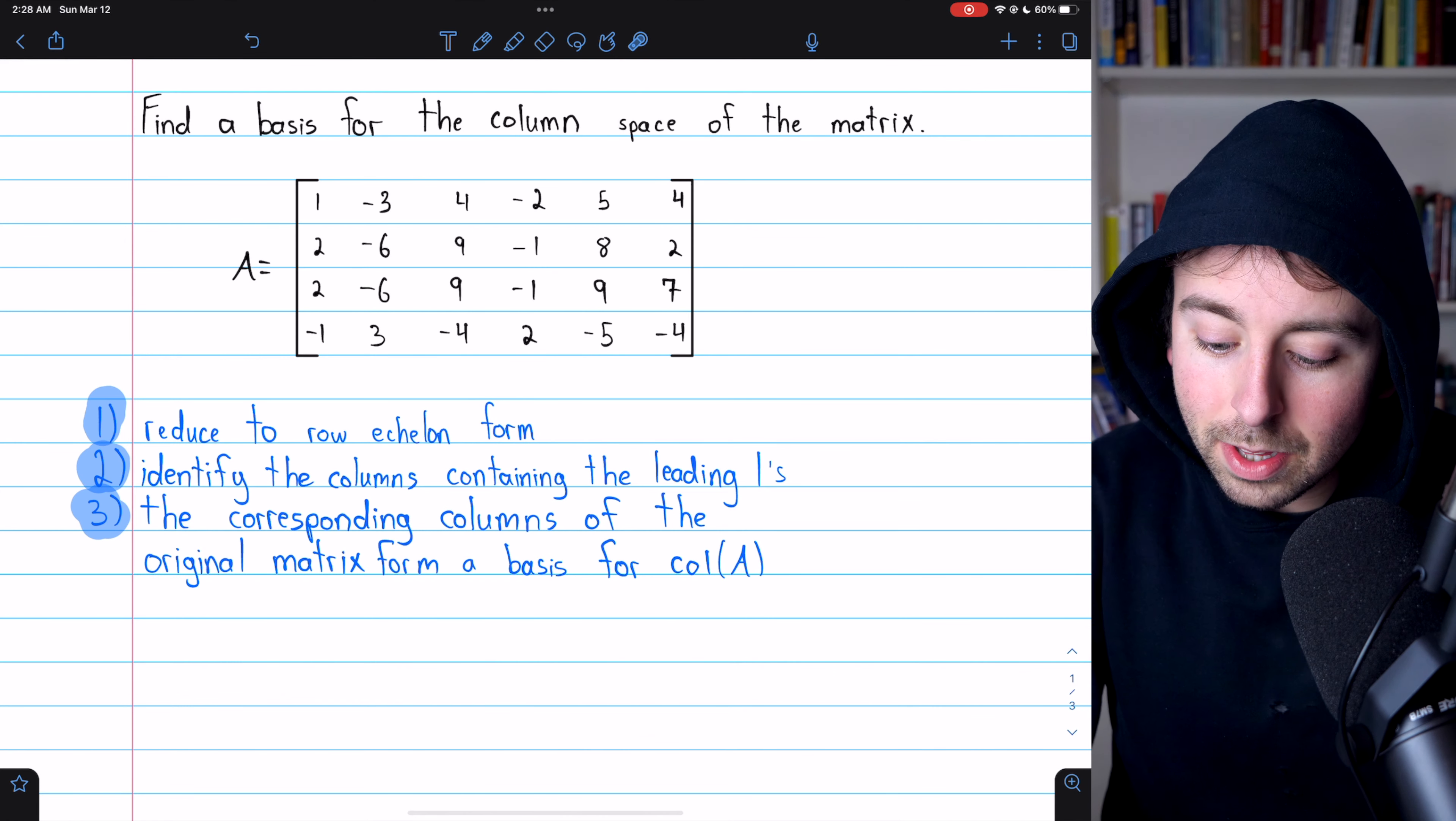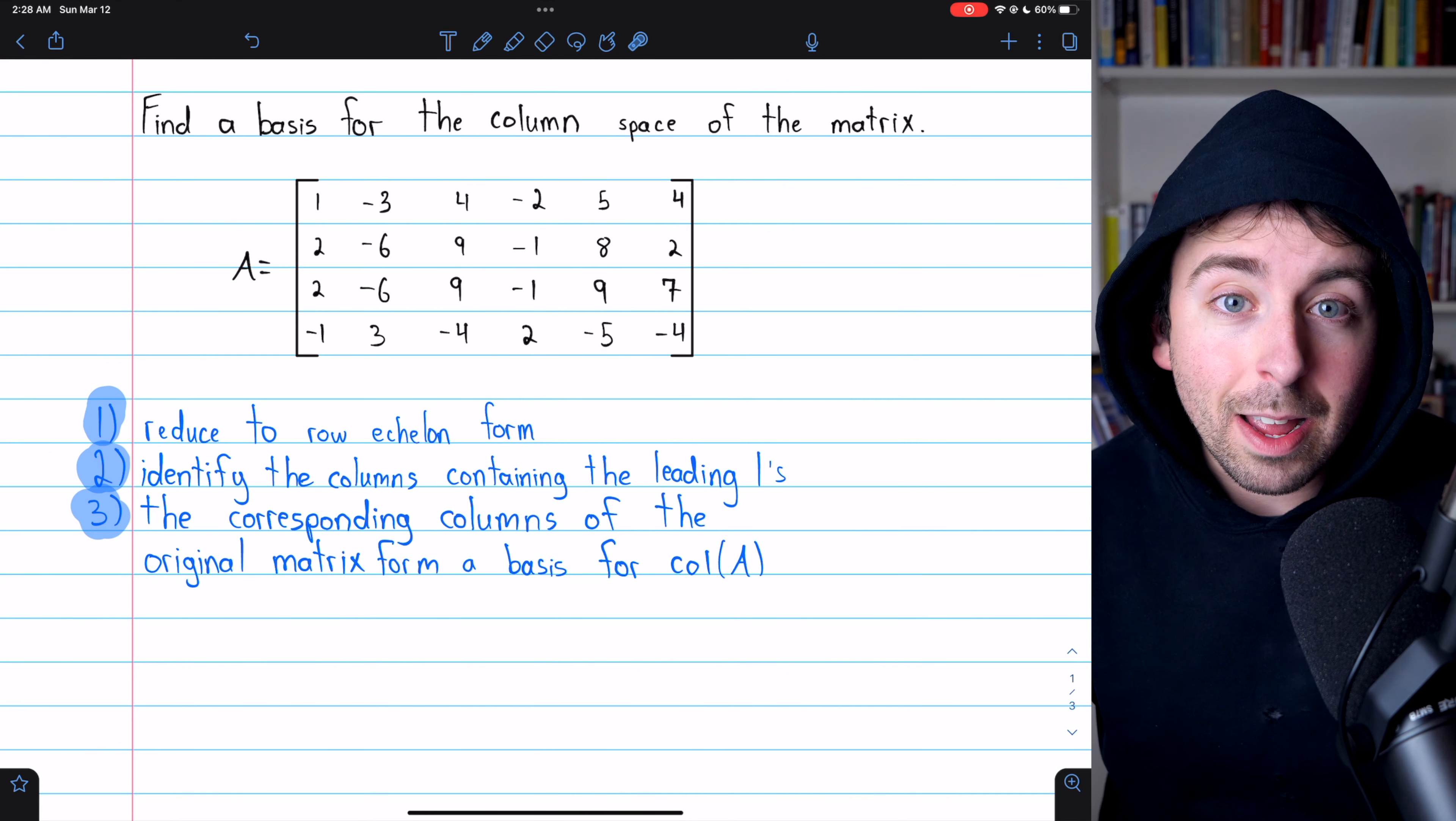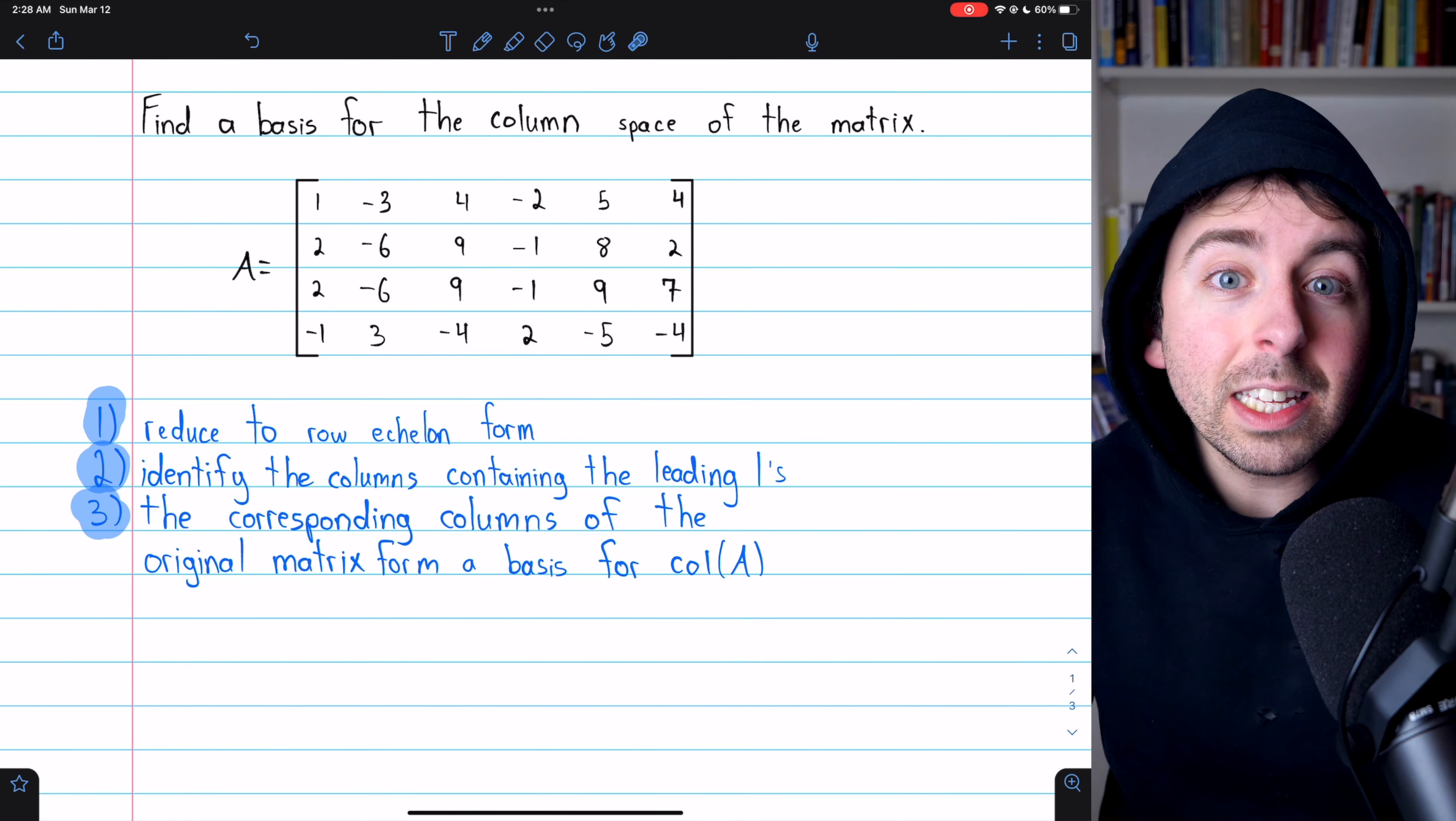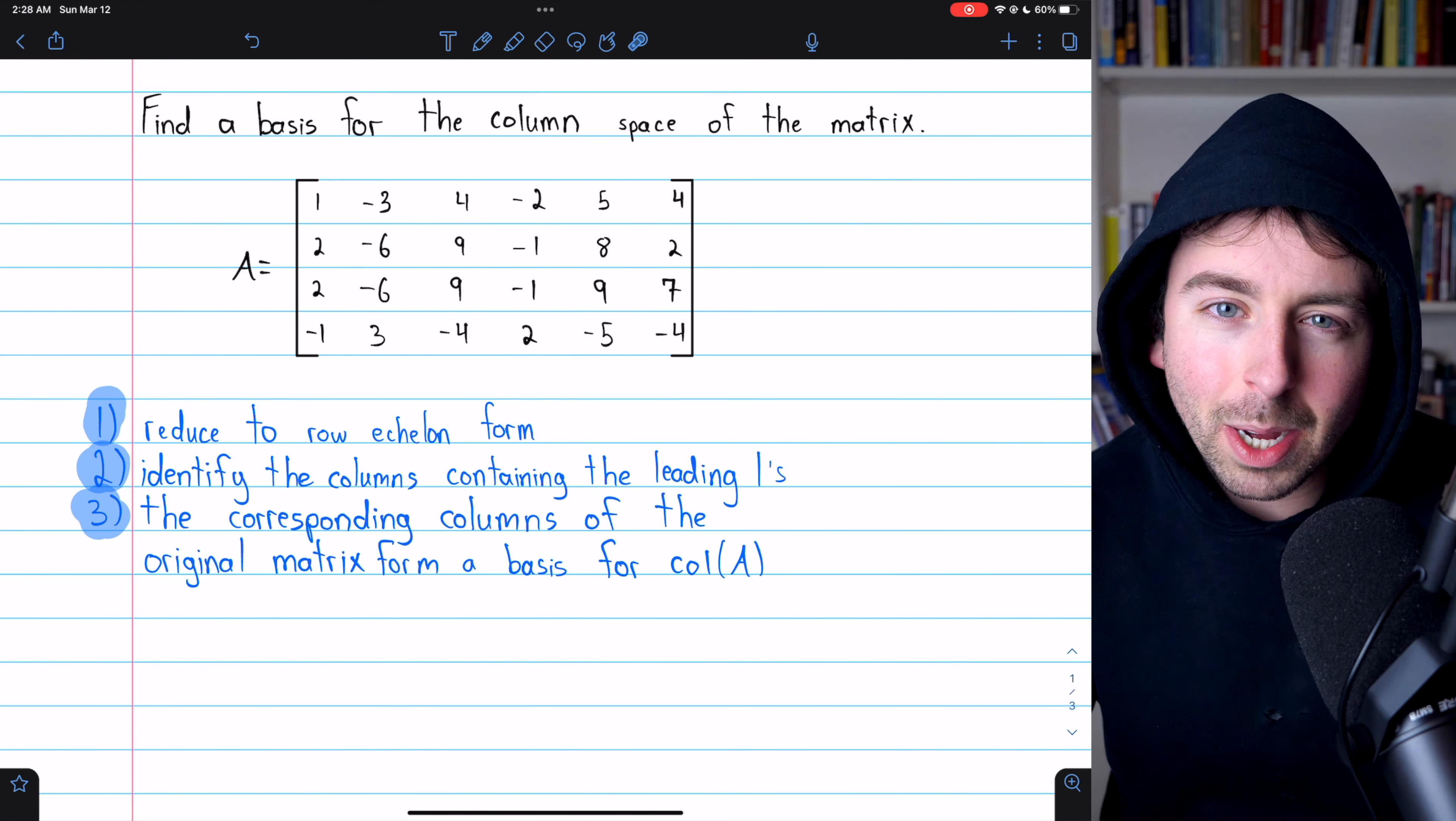We're going to find a basis for the column space of this matrix A. In a previous lesson, we found a basis for the row space, and I'll leave a link in the description to that lesson. This is slightly more complicated, but it's not bad.